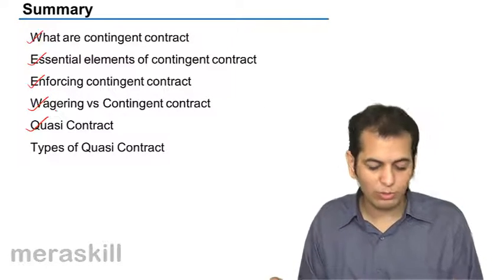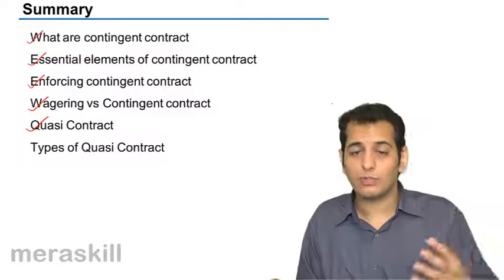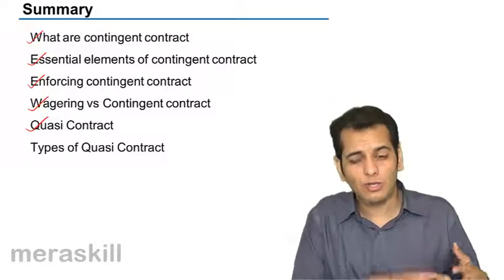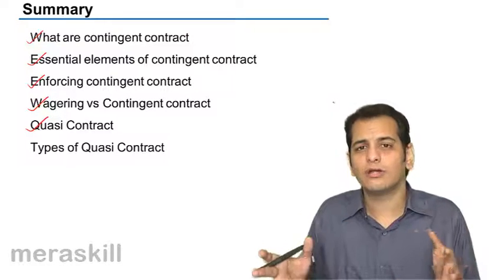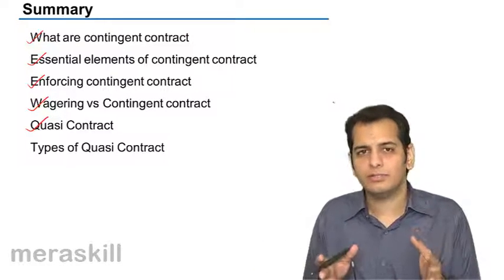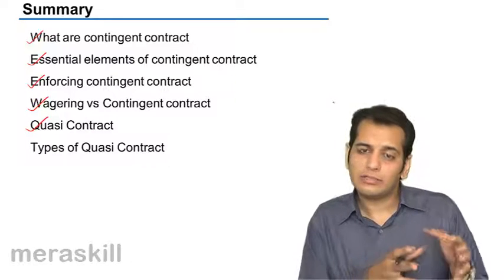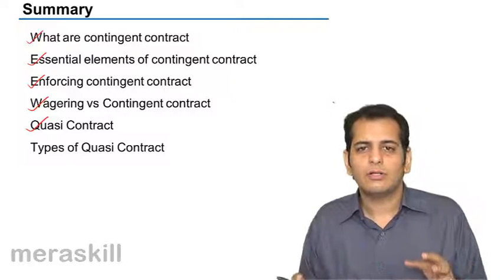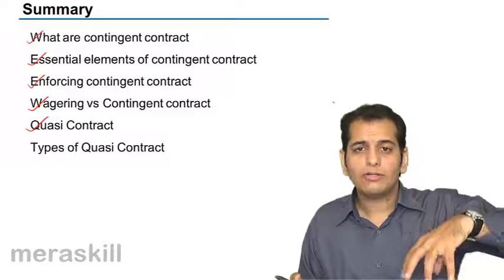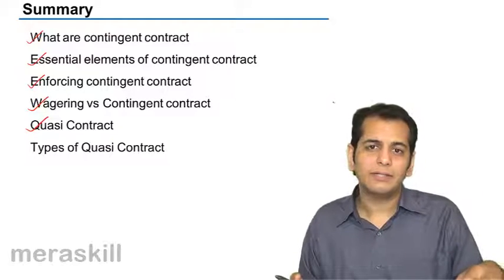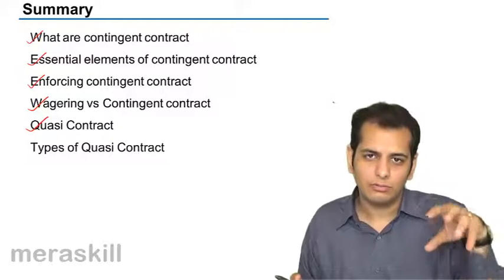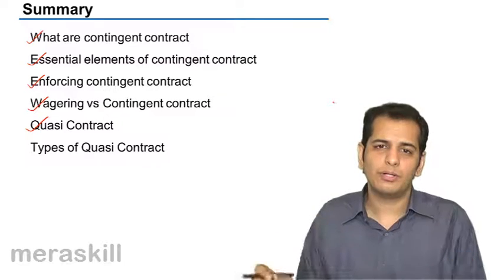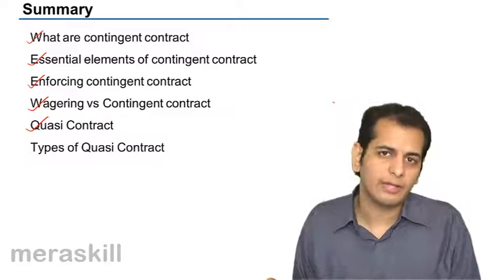Then we learned what quasi-contracts are. Quasi-contracts, we said, are contracts which are not essentially contracts per se. They are created by law, and law creates a liability on your part, and that liability gets converted into a contract.